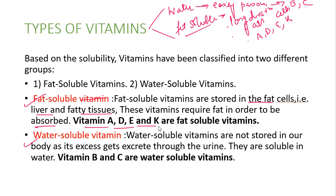Vitamins A, D, E, and K are fat-soluble vitamins. Vitamin B and C are the water-soluble vitamins, which are not stored in the body for long and pass out easily.